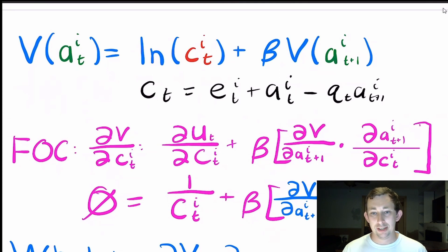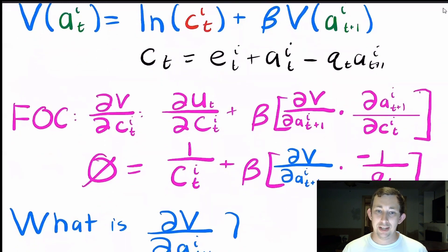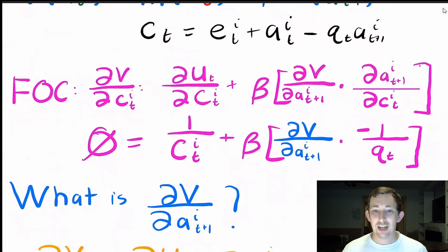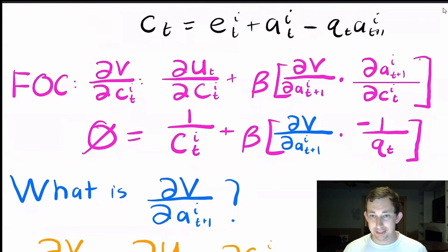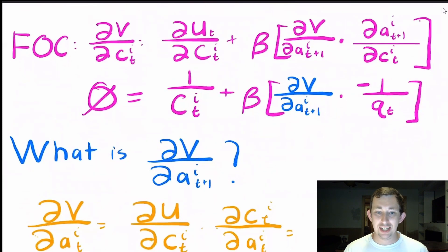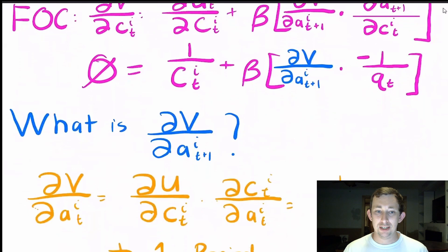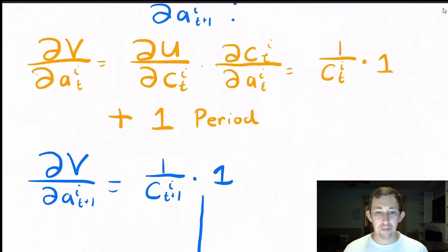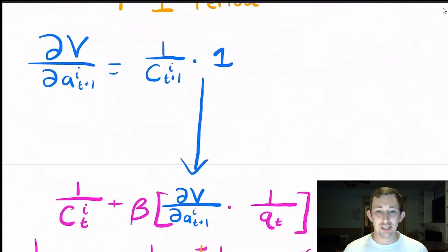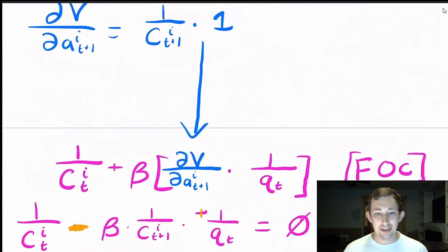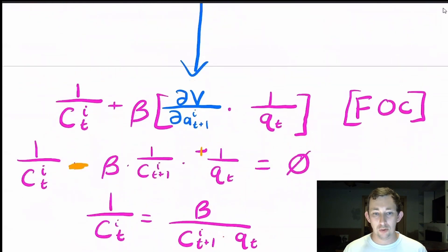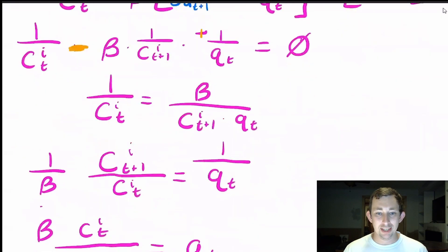I can take the derivative of the natural log function. For beta times dV/da_{t+1}, I don't directly know that term, but I do know that if I consume one more unit today I can buy one fewer asset tomorrow — which is why I have negative one over q_t there. For dV/da_{t+1}, the trick is: I take dV/da_t, which equals one over c_t, and bring it forward one period to get one over c_{t+1}. I then plug that back in for dV/da_{t+1} into my initial first order condition and do some algebra.